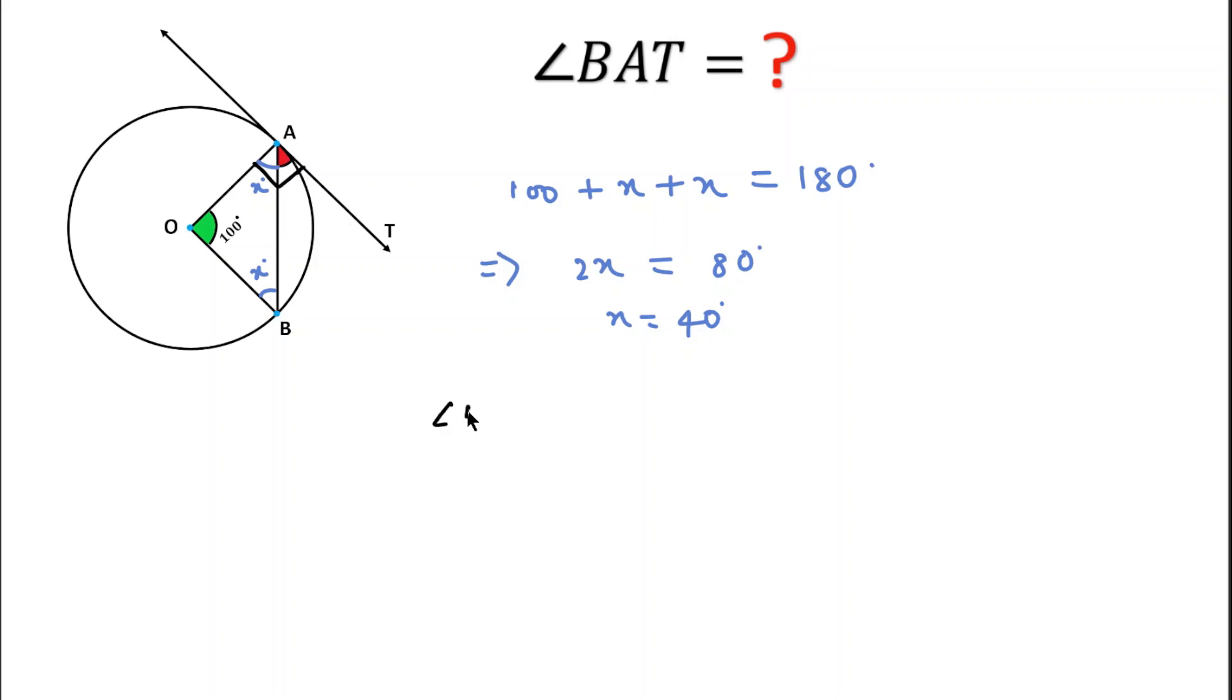So we can write angle BAT equals 90 minus 40, because x is 40 degrees. So this is equal to 50 degrees. So 50 degrees will be the required answer for this question. Thanks for watching this video.